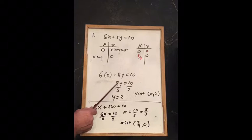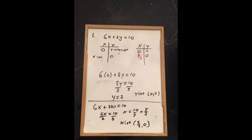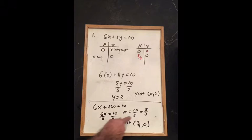Here's the work for that. Putting in 0 for x, you get 5y equals 10, divided by 5, y equals 2. So that's where the 0 comma 2 comes from. And then putting in y equals 0, you get 6x equals 10 divided by 6.